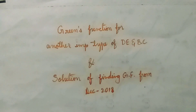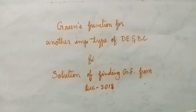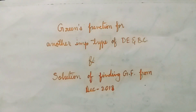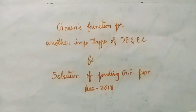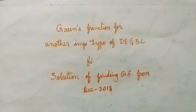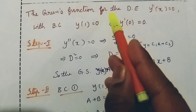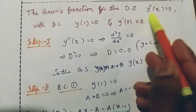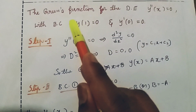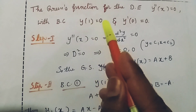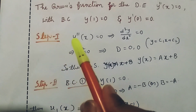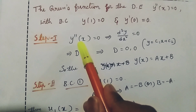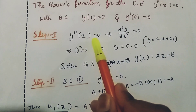Hello viewers, welcome to Physics Universe. I am presenting Green's function for another important type of differential equation with boundary conditions. The problem is finding the Green's function for the differential equation y double dash of x equal to zero, with boundary conditions y of one equal to zero and y dash of zero equal to zero.